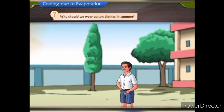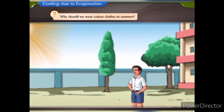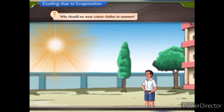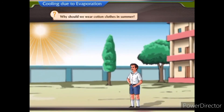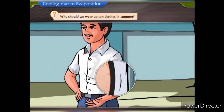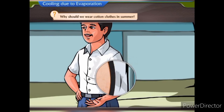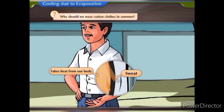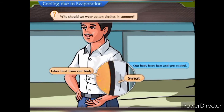Why should we wear cotton clothes in summer? In summer, we perspire more. Cotton, being a good absorber of water, helps in absorbing the sweat and exposes it to the atmosphere for evaporation. When sweat evaporates from our body, it takes heat from our body. Thus, our body loses heat and gets cooled.